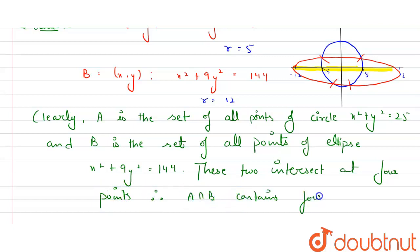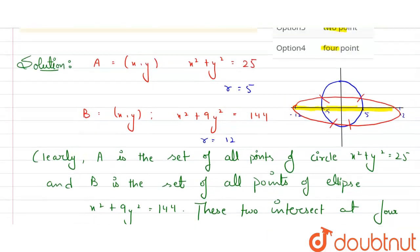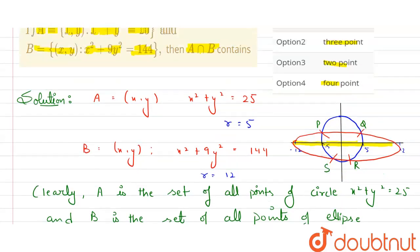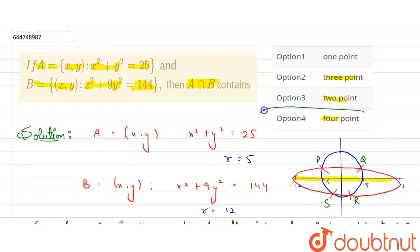Therefore A intersection B contains four points. As I said, A intersection B will contain four points because it will intersect at four points - suppose these P, Q, R, and S points. So the answer is four points, which is option D. Thank you.